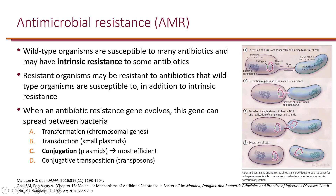Resistant bacteria are those that are resistant to antibiotics that wild type bacteria would normally be susceptible to. For example, wild type Staphylococcus aureus is susceptible to penicillin, but many Staphylococcus aureus strains have developed resistance to penicillin. Wild type Pseudomonas aeruginosa, on the other hand, is intrinsically resistant to penicillin.